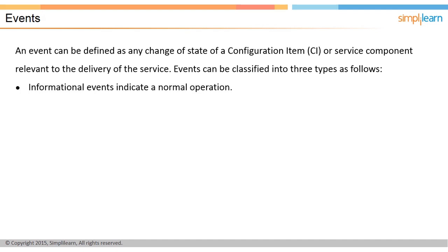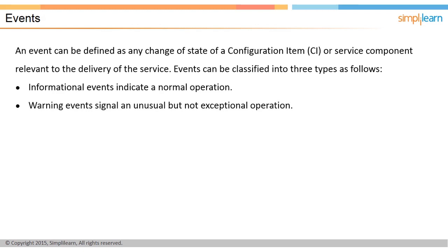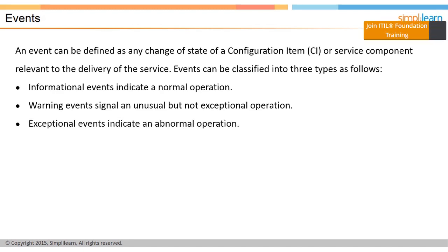Informational events are those indicating a normal operation, such as when a user logs on to use an application. Warning events signal an unusual but not exceptional operation; they indicate that the situation requires a little more supervision than informational events, such as when the utilization of a server's memory reaches within 5% of its highest acceptable level. Exceptional events indicate an abnormal operation, for example when a user tries to log on to an application with an incorrect password.